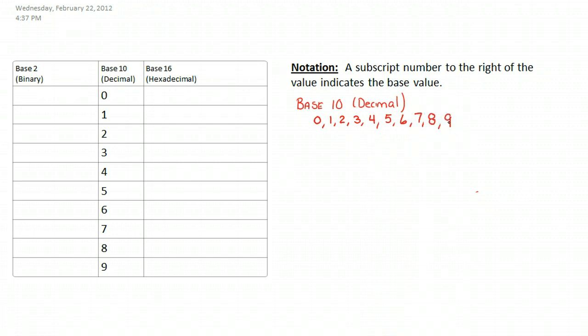Well, it turns out computers work in something called base 2, which is sometimes called binary. And so base 2 means that you have two possible values that can go in each position. And in this case, it's 0, 1.